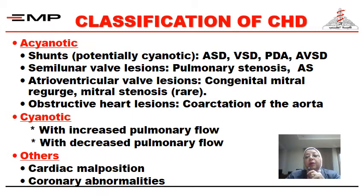Atrioventricular valve lesions include congenital mitral regurgitation and mitral stenosis, which are rare. Obstructive heart lesions include coarctation of the aorta. The cyanotic lesions are divided into those with increased pulmonary flow and those with decreased pulmonary flow. Cardiac malpositions and coronary abnormalities are also forms of congenital heart disease.